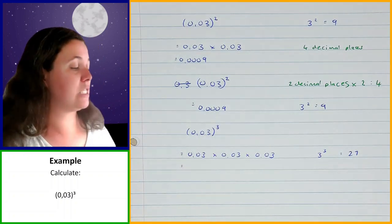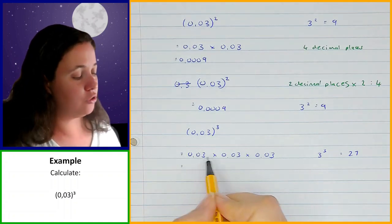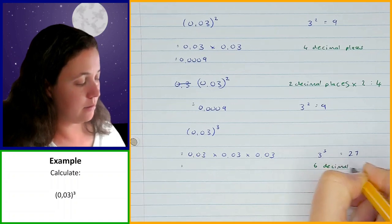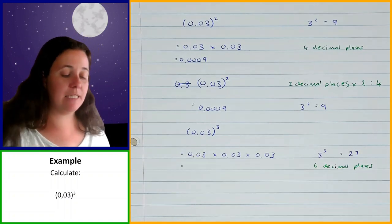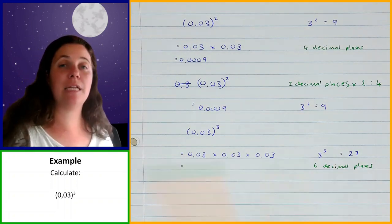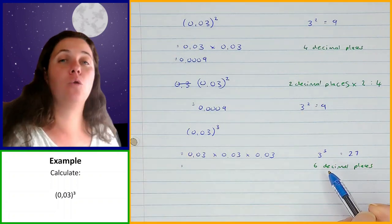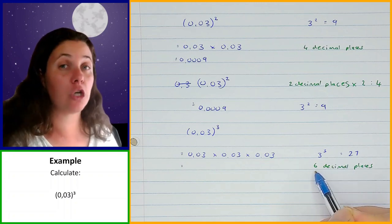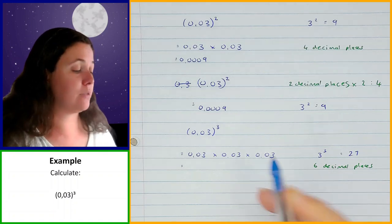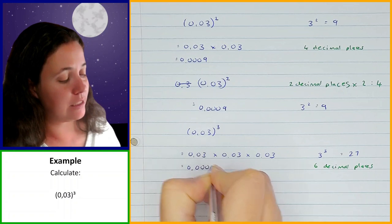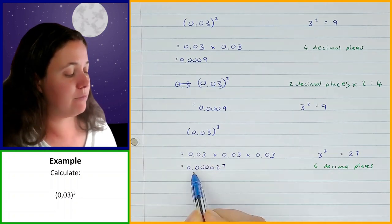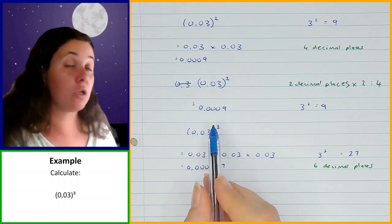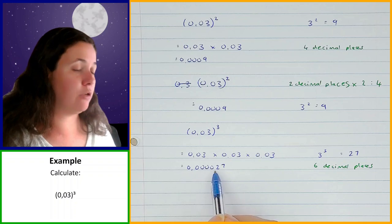Now how many decimal places do I need? There are 6 decimal places across the three numbers. So I need 6 decimal places, and 27 needs to be at the end of those decimal places. Since 27 is 2 digits, I need to fill in 4 zeros before it. So it's 0, then four zeros, then 2, 7 — giving 0.0000027. So 0.03 cubed equals 0.0000027.